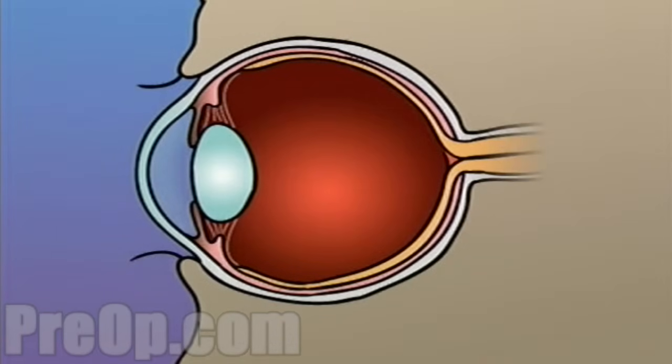The human eye is constructed like a camera, with a clear lens in the front and light sensitive tissue at the rear. This tissue makes up the retina, which acts like photographic film.